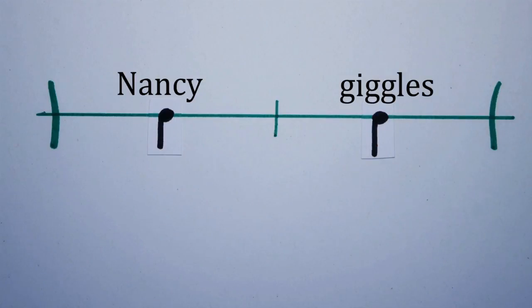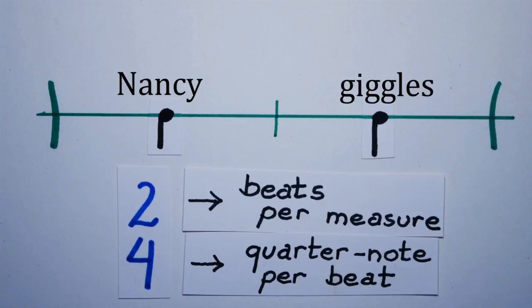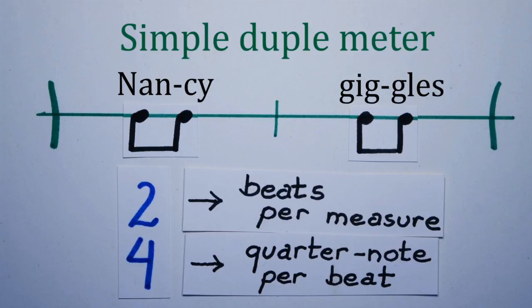The time signature will be two four. Two beats per measure, one quarter note per beat with two pulses per beat. Nancy giggles. This pattern is called simple duple meter.